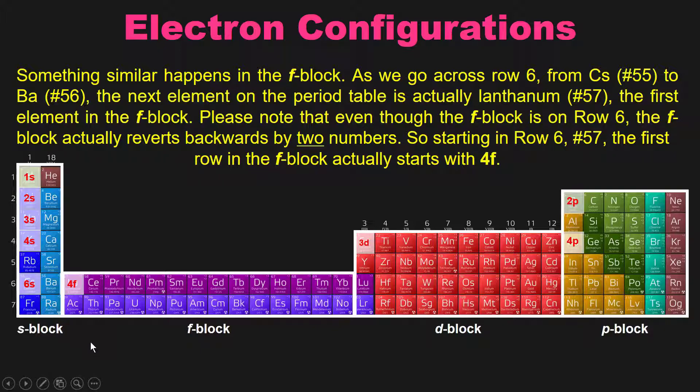Disappointing? Yeah. Weird? Yes. Do you have to know it? Absolutely. So please remember then, that the D block is actually one row smaller than the row it corresponds with on the periodic table, and the F block is 2.